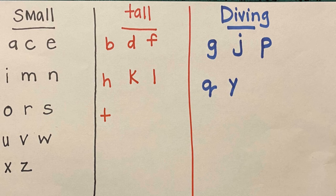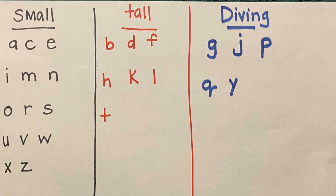Tall letters are letters B, D, F, H, K, L, and T. Diving letters are letters G, J, P, Q, and Y. That's the whole alphabet!